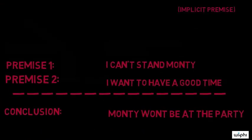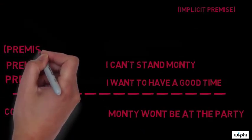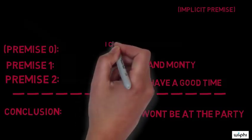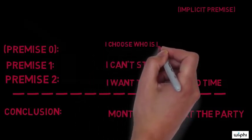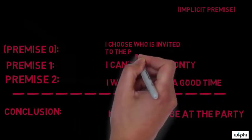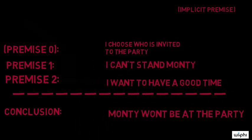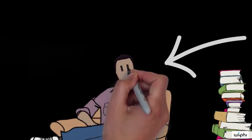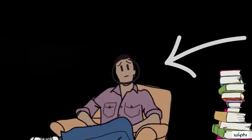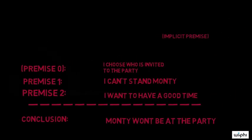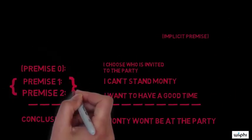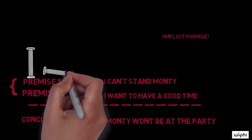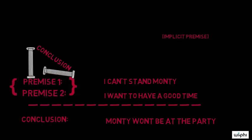It's worth pointing out that the red argument, though bad as it stands, could be made a good argument with the addition of some background premise. For example, if you found out that your friend was the person who decided who was going to be invited to the party, then the fact that she can't stand Monty and wants to have a good time would give you a good reason to believe that Monty won't be at the party, because it would give you reason to believe that she didn't invite him. But as it stands, those two premises give you no reason to believe that Monty won't be at the party.